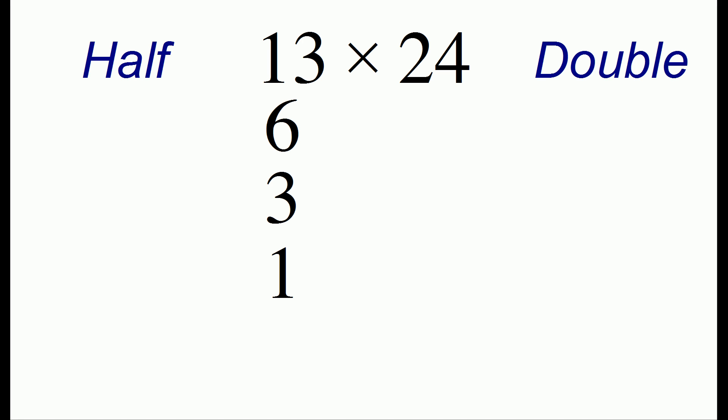The second step is to take the number on the right and keep doubling it. So the number 24 when doubled is 48. Then we're going to double this number again to get 96.